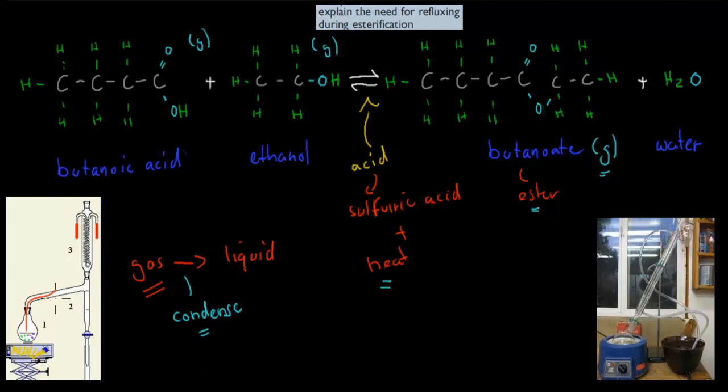So in this case, we have the ester wanting to leave. It's in vapor form, and then it will hit this—which we call our reflux condenser, or sometimes just refluxing. The reason I mention this is the question says 'explain the need for refluxing during esterification.'